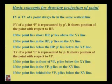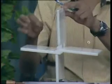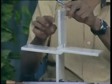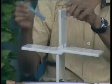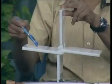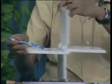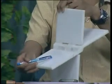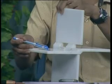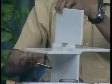If the point P lies behind the vertical plane, and we see from the top view, its projection will lie on the horizontal plane. The horizontal plane will be rotated 90 degrees clockwise, so the projection of the point from the top view will lie below the XY line.